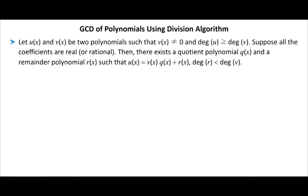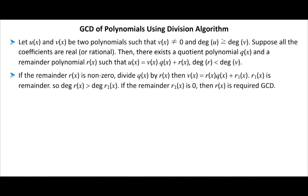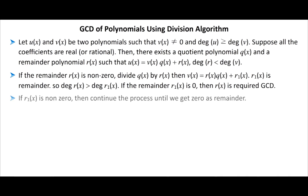Let U(x) and V(x) be two polynomials such that V(x) is not equal to 0 and the degree of U is greater than the degree of V. If all coefficients are rational, there exist a quotient polynomial Q(x) and remainder R(x) such that U(x) equals V(x)·Q(x) plus R(x), where the degree of R is less than the degree of V. If R(x) is nonzero, divide V(x) by R(x) to get R1(x). If R1(x) is 0, then R(x) is the GCD; otherwise continue the process until the remainder is 0.